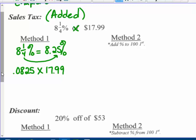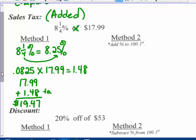When you multiply that, it comes out to $1.48. Tax gets added on, so $17.99 plus $1.48 gives your total cost of $19.47. This is the tax, this is the total.